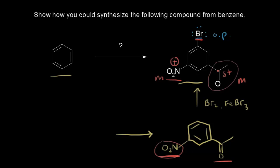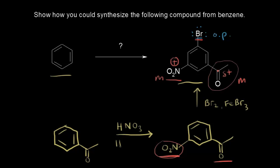The acyl group must come on before the nitro group. So in this step, we're putting on the nitro group. The immediate precursor is the benzene ring with just the acyl group attached. We need to do a nitration, which requires concentrated nitric acid and concentrated sulfuric acid.